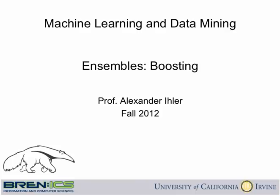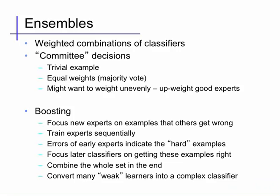Boosting uses ensemble techniques to create a sequence of increasingly complex predictors out of building blocks made out of very simple predictors. Boosting trains models by sequentially training a new simple model based on the errors of the previous model. We start off by learning a very simple predictor, then evaluate its errors and focus the next predictor on getting those examples right. This procedure tends to discover examples and data points that are hard to predict and focuses later classifiers on predicting these examples better.